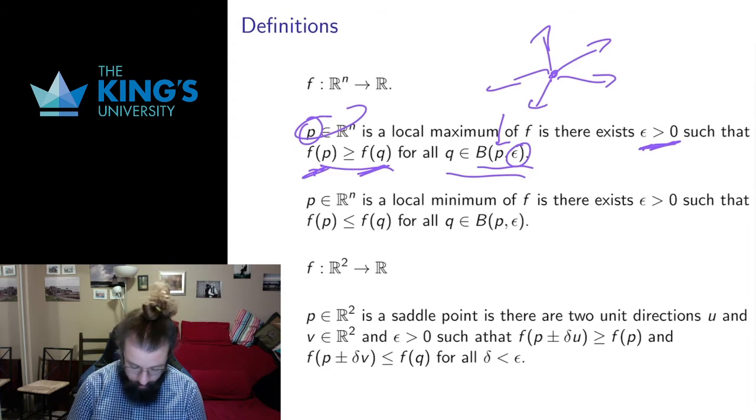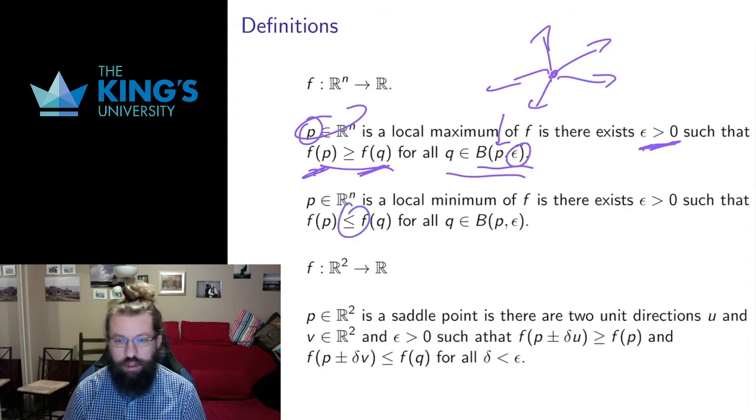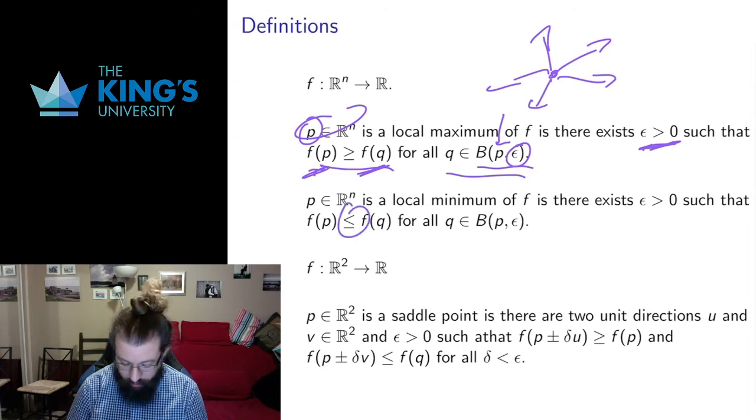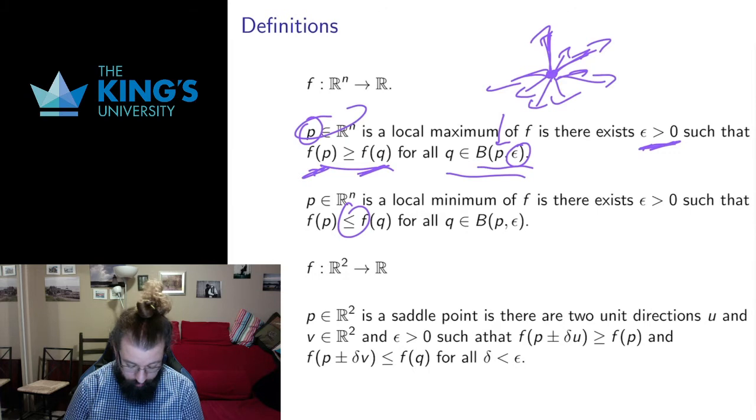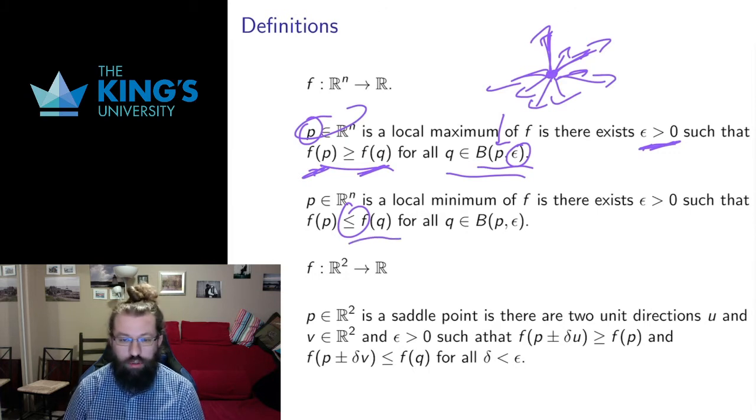Same thing for local minimum, exactly the same definition but reverse the inequality. Likewise, in all directions it has to be a minimum, so if this is a local minimum, then all directions of movement have to give me values which are larger or equal to the minimum.